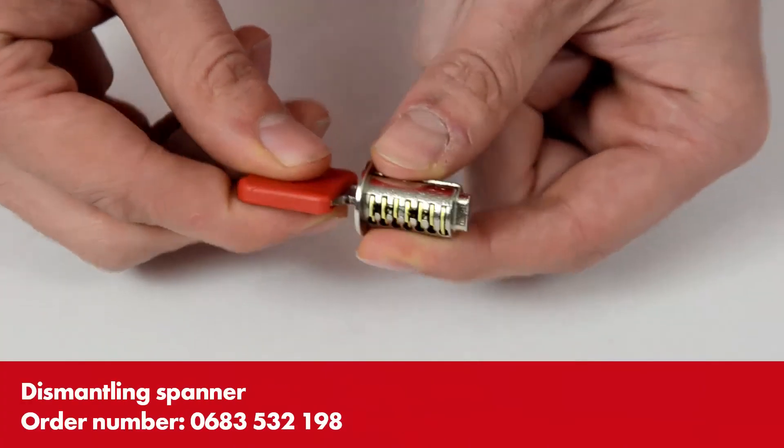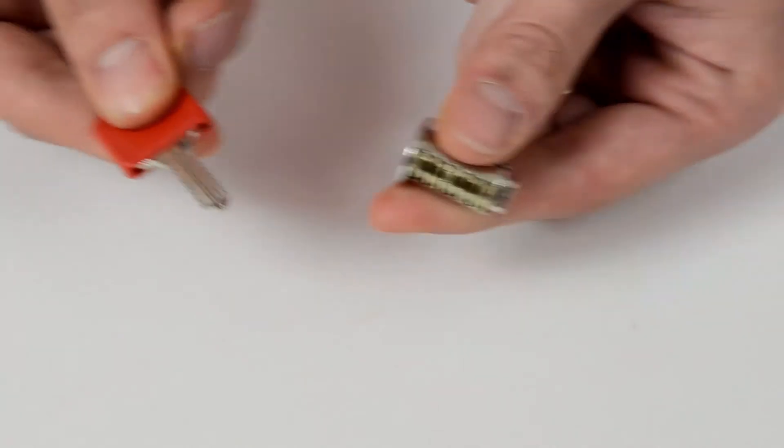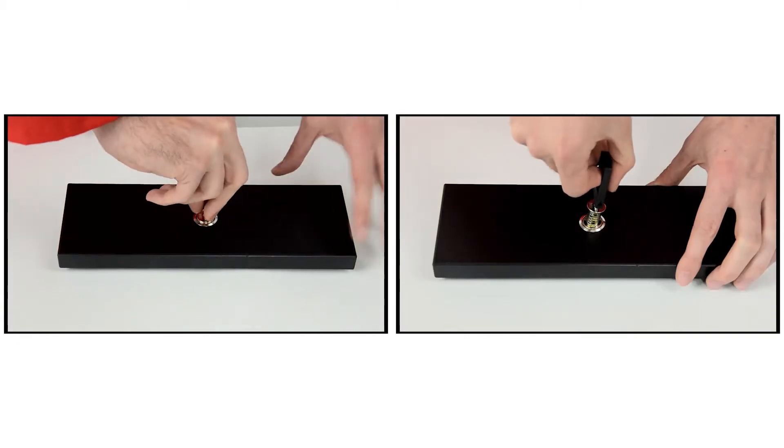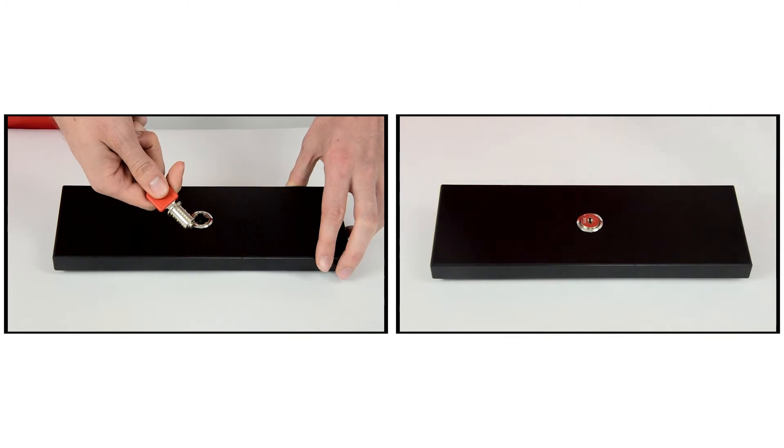The dismantling spanner fits all MS-5000 cylinder interchangeable cores. It can be used for fitting or removing interchangeable cores and also allows a later cylinder replacement.